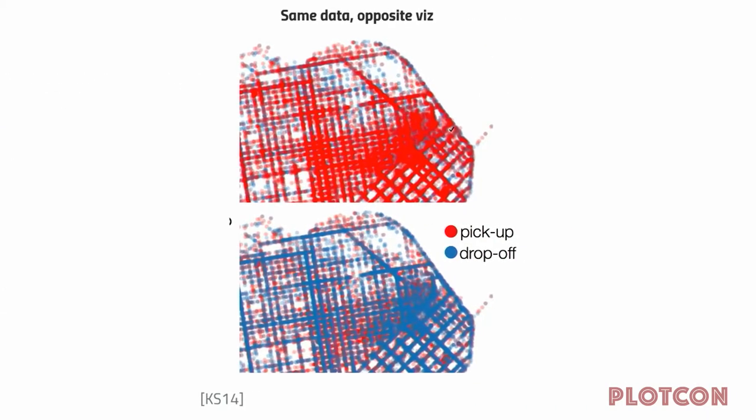Here's another example: these are pickups and drop-offs — imagine a heat map that Uber would generate. It is the same data in both visualizations. However, the top visualization gives the impression that the map is dominated by pickups, while the bottom gives the impression it's dominated by drop-offs. Both of these impressions are a hallucination.